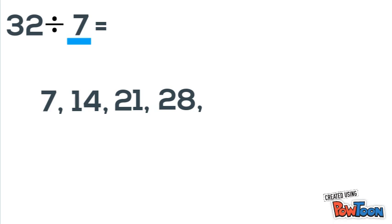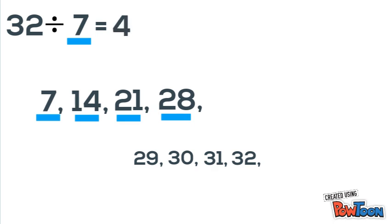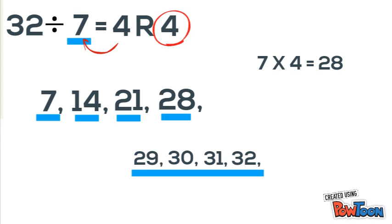Now to figure out the remainder, I can just count on. So 29, 30, 31, 32. So I counted by 7 four times, so my answer is 4. And the 4 more is my remainder, so we have 4 remainder 4. So 32 divided by 7 equals 4 with the remainder of 4. To check this, we can do 7 times 4 is 28 plus 4 is 32.